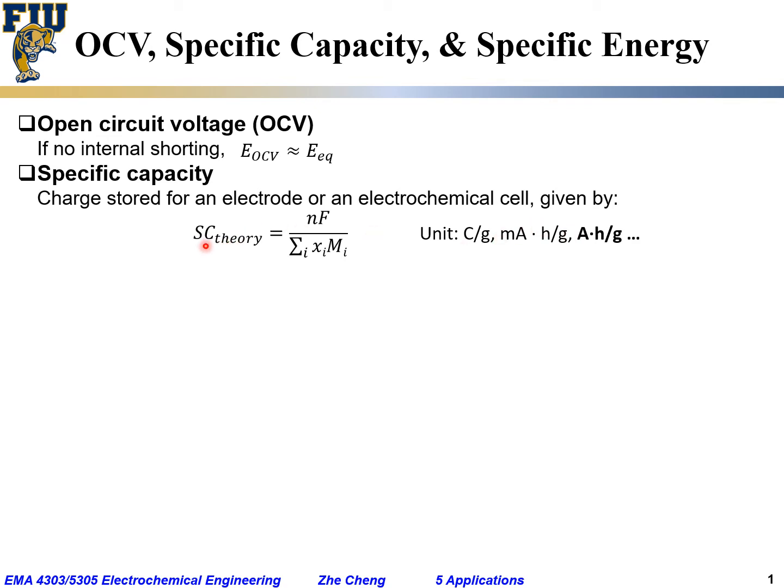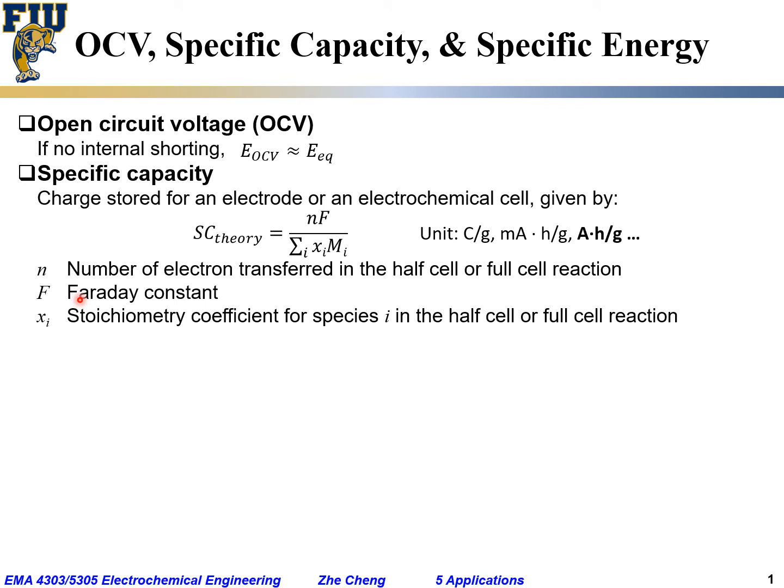And the specific capacitance in theory, we said n would be the number of electrons transferred in that electrode or half cell reaction, or for the overall reaction if we talk about full cell. And then F, as would be remembered, would be Faraday constant, 96,485 coulomb per mole. And x_i would be the stoichiometry coefficient for species i in the half cell or the full cell reaction.